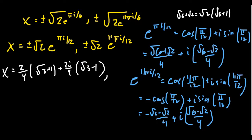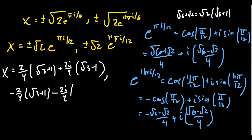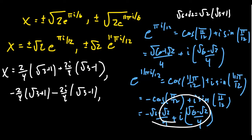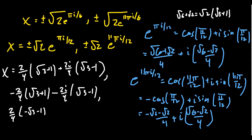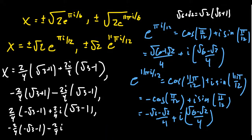For the negative case of that first expression, we get 2 over 4 times negative root 3 plus 1, with a corresponding negative imaginary part. Moving to the 11 pi i over 12 case, taking out 2 over 4 leaves behind a negative root 3 minus 1 for the real part and 2 over 4 times i times root 3 minus 1 for the imaginary part. Multiplying by negative 1 gives negative 2 fourths times negative root 3 minus 1, minus 2 fourths i times root 3 minus 1.